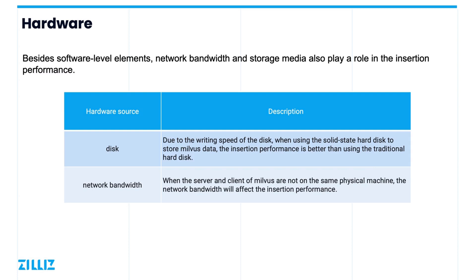In addition to software-level factors, hardware factors can also affect the performance of data insertion. Two main areas of importance are the storage medium and the network bandwidth. When Milvus is in the process of inserting data it performs many reads and writes, so the faster the storage medium, the better the performance. It is recommended to use a system with SSDs as a storage medium. Additionally, network bandwidth plays a big role in insert speed. If the Milvus server and client are not on the same machine, inserting data can be greatly hurt by slow network speeds.